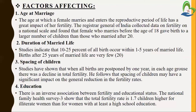The second factor is the duration of married life — how much time during the marriage. Studies indicate that 25 to 30 percent of all births occur within 1 to 5 years of married life, meaning couples plan their babies in the first 1 to 5 years after marriage. Births after 25 years of married life are very few.